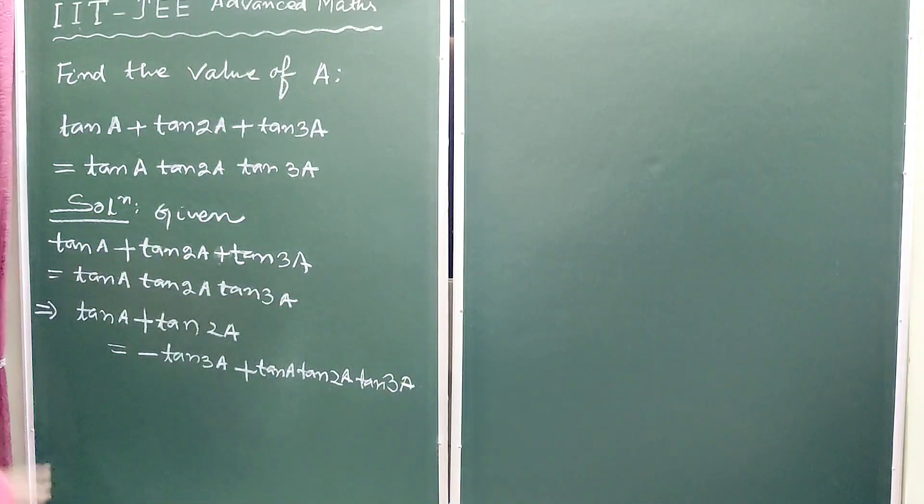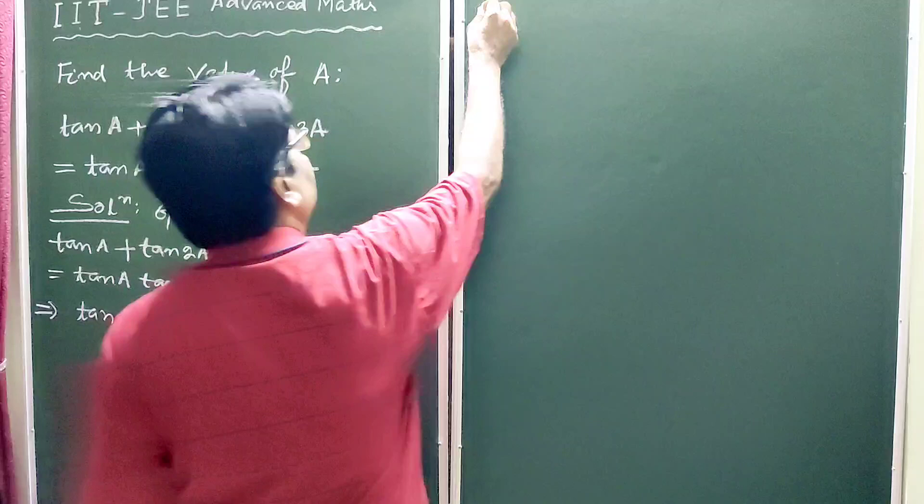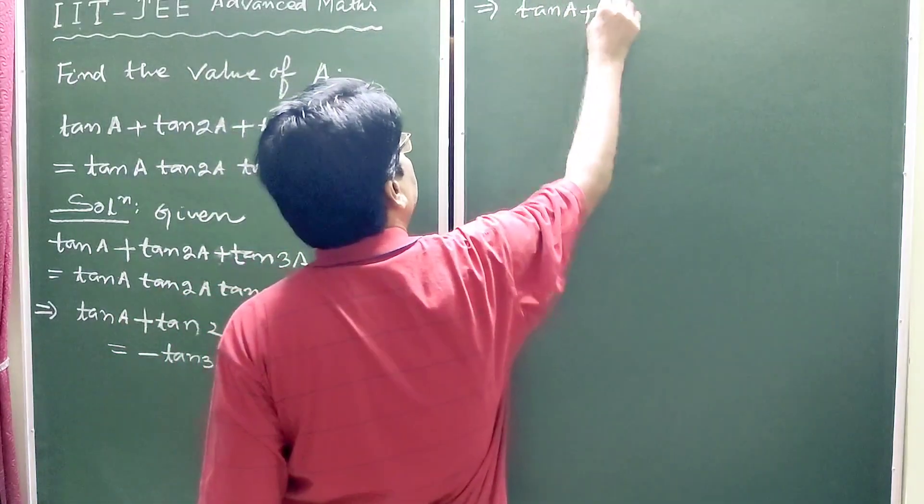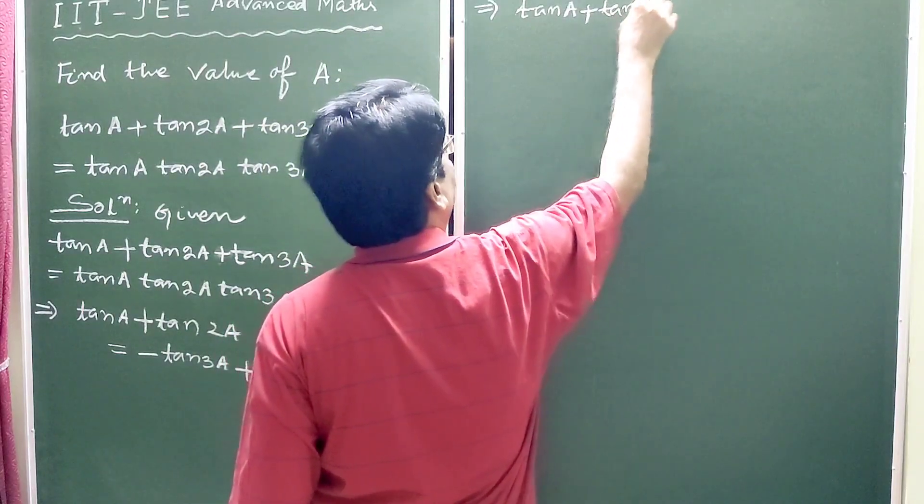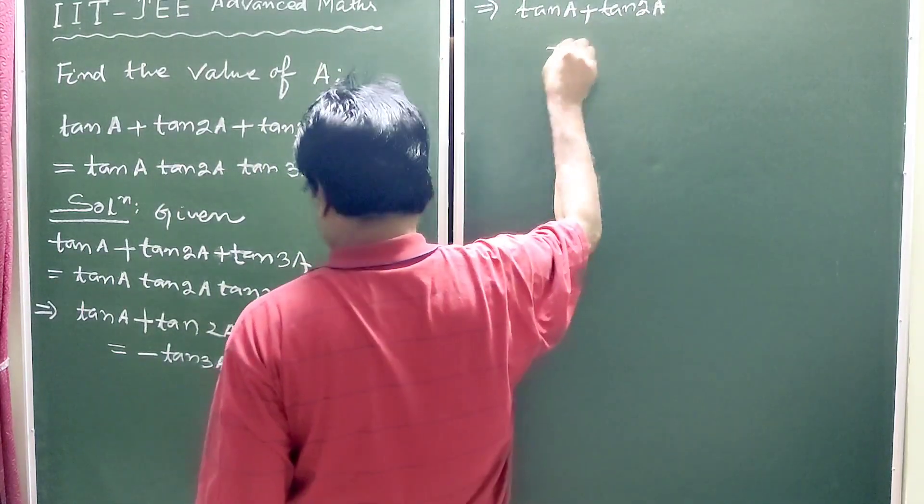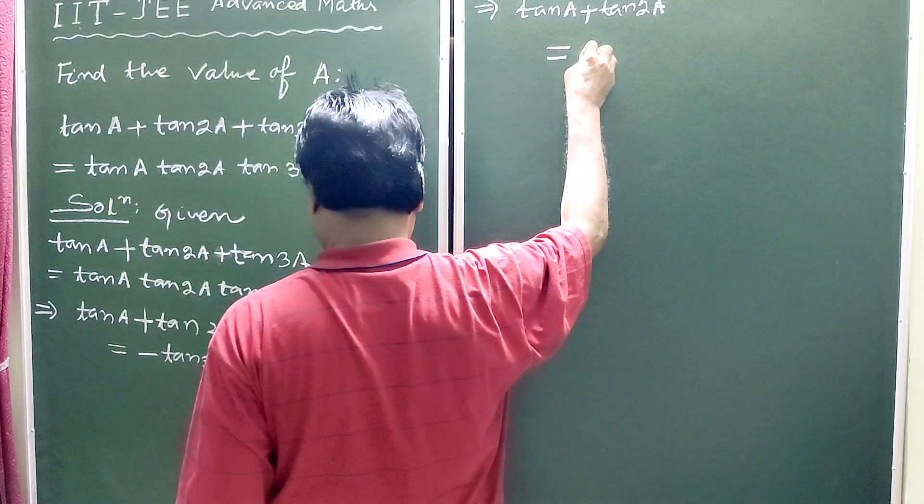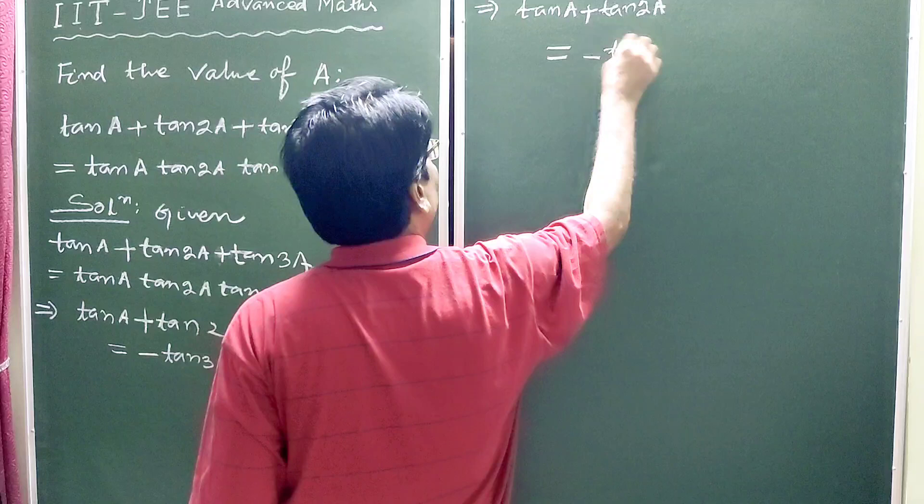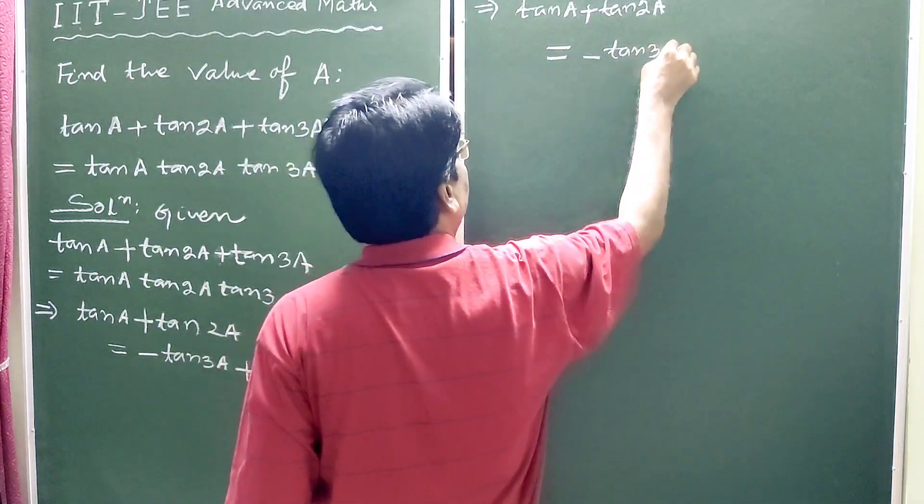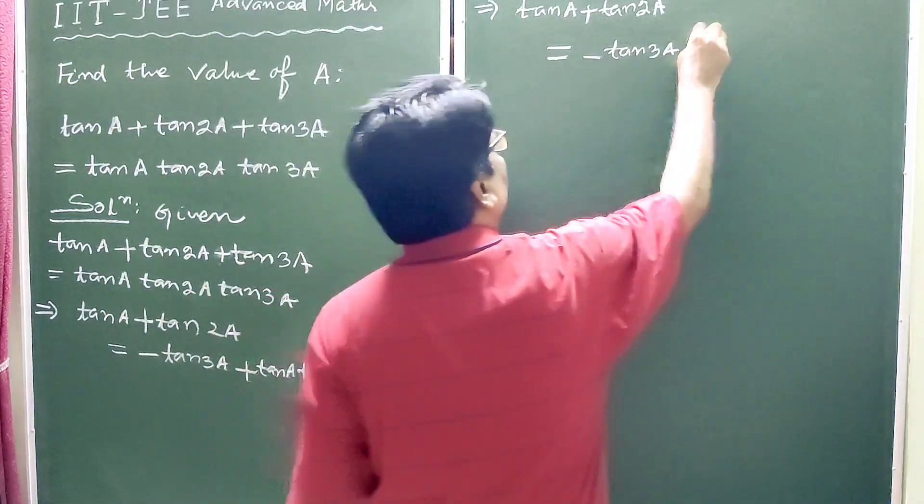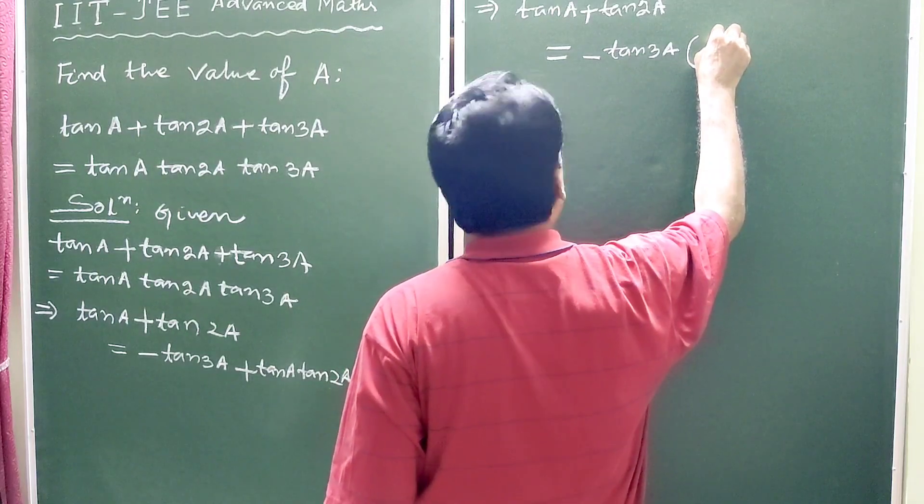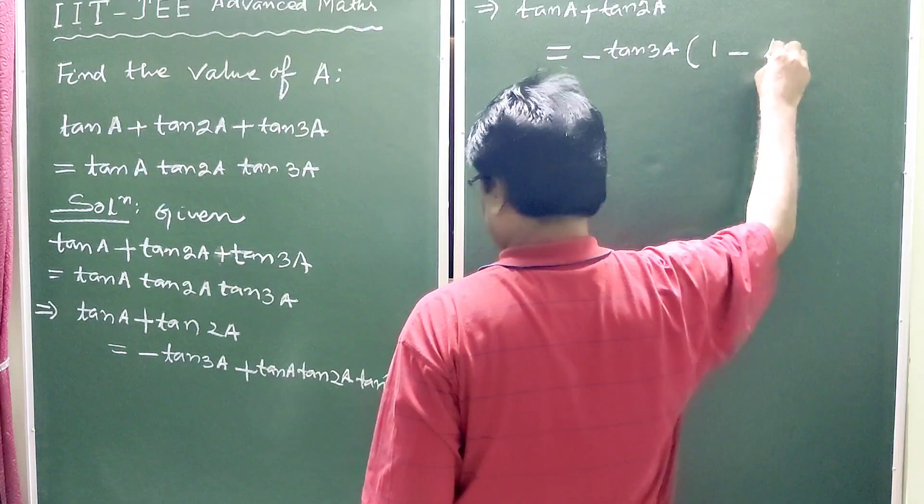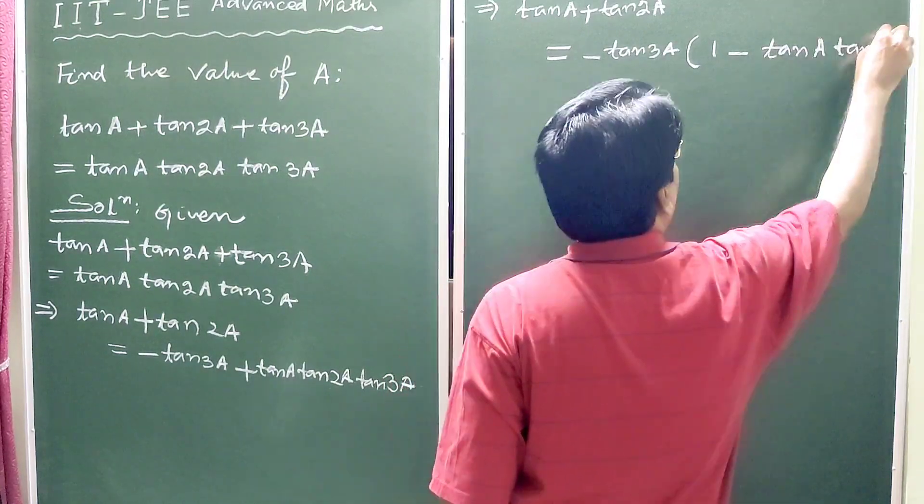So then this implies tan A plus tan 2A equals minus tan 3A common, so it will be 1 minus tan A into tan 2A. This implies tan A plus tan 2A by 1 minus tan A tan 2A.